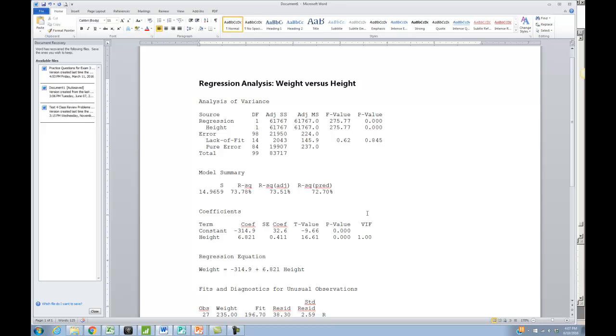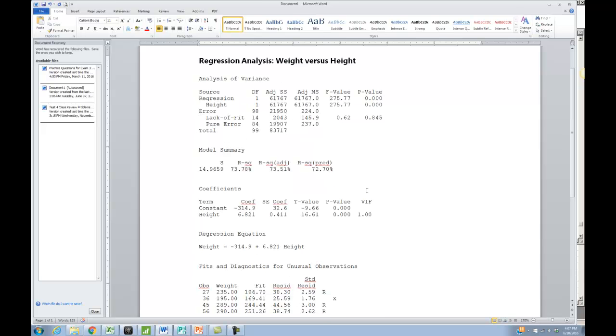As you can see, Minitab gives you lots of stuff. Most of this, you're not going to have any idea what it means or what to do with it at this point in the semester. So I'm going to show you what to look for. First of all, one really important thing that we're going to find is the regression equation. So it tells us that the regression equation is weight equals negative 314.9 plus 6.821 times height.